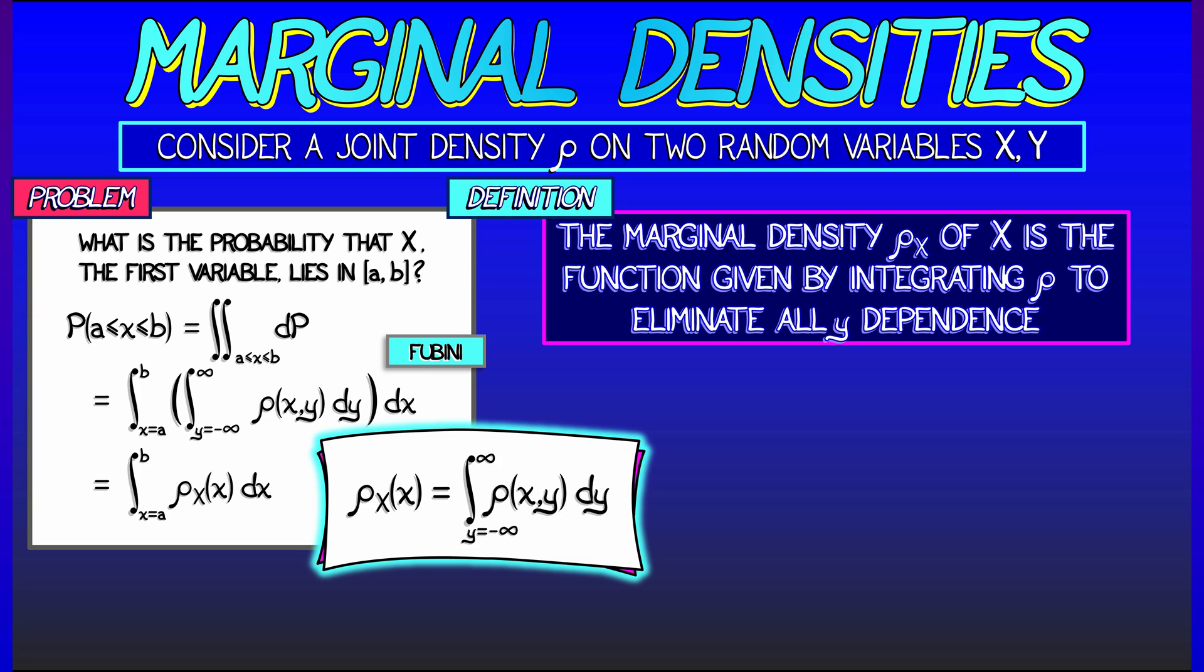By Fubini, this is the integral of rho sub x dx as x goes from a to b. That's really why rho sub x is a probability density function on the x-axis.